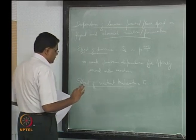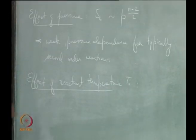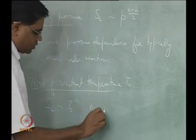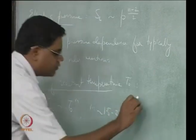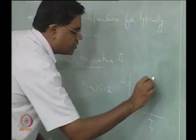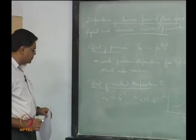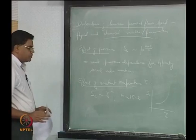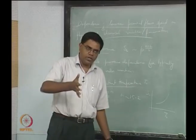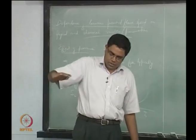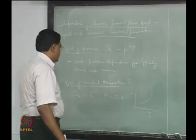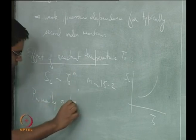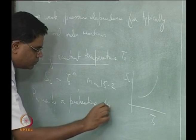As far as T0 is concerned, the gross effect is that SL goes as T0 to the m, where m is around 1.5 to 2. So if you look at SL versus T0, you get graphs that rise like that. This is mainly a preheating effect: the reactants approach the flame in a flame-fixed coordinate system, pass through the preheat zone, and the temperature has to rise up to the reaction temperature in the reaction zone. So this effect is primarily a preheating effect.